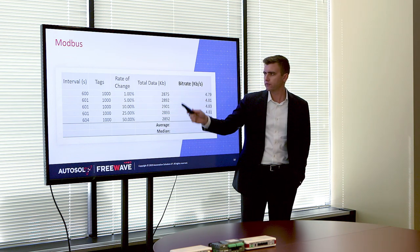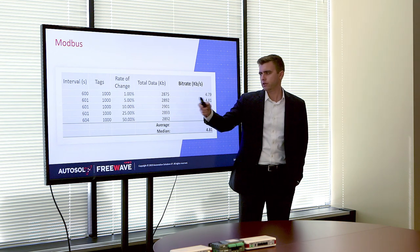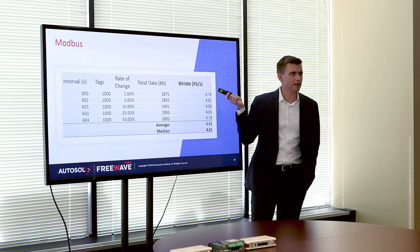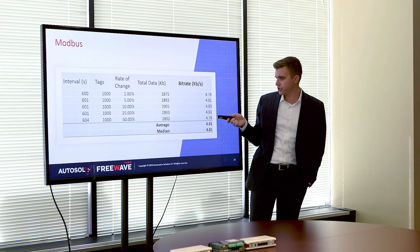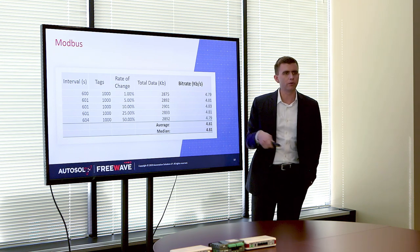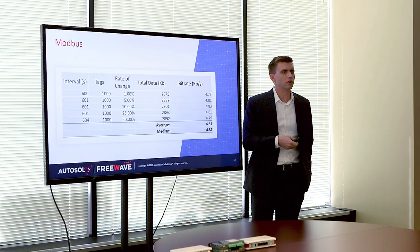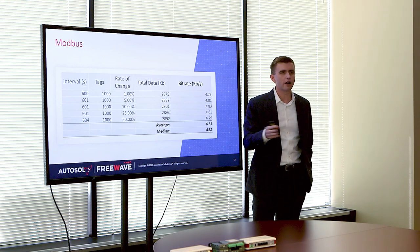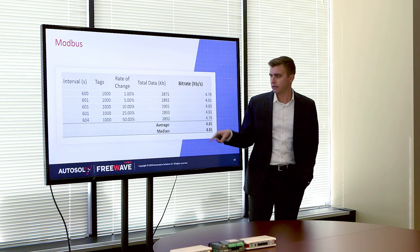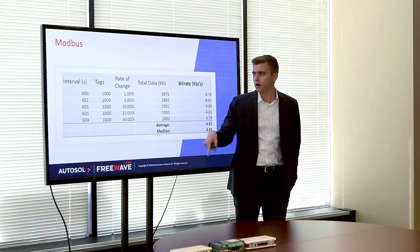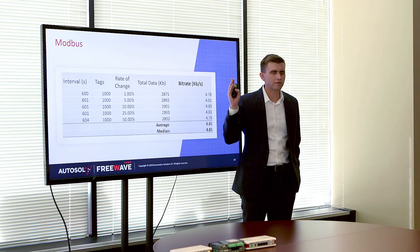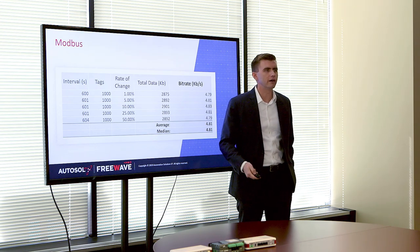2,875 kilobytes for 1% change rate, 2,892 for 50% — very little difference. Breaking that down to kilobits per second, you get an average and median of 4.81 for each one. Since the average and median are the same, there's no outlier skewing results. Basically, no matter what the rate of change was, we used the same amount of bandwidth, because in poll-response we have to send every value that was requested up every time.